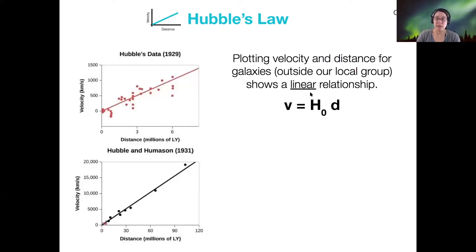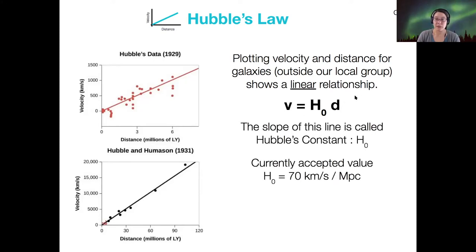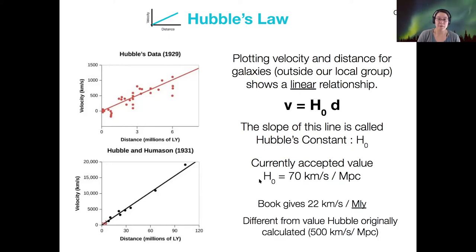So what does this mean? What does a linear relationship mean, and especially one with no y-intercept? It means that the velocity of galaxies is directly proportional to their distance away from us. And the slope of that relationship is called Hubble's constant, H₀. The currently accepted value for Hubble's constant is 70 kilometers per second per megaparsec. So if a galaxy is one megaparsec away from us, it's moving at 70 kilometers per second away from us. The book gives this number in kilometers per second per mega light year, but almost nobody else uses that. This is different from the initial value that Hubble calculated.